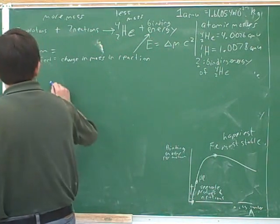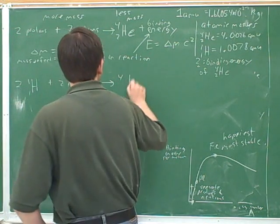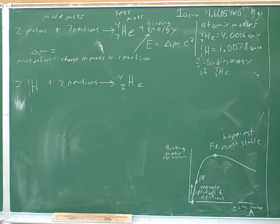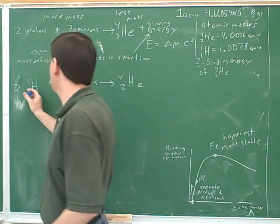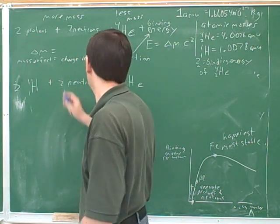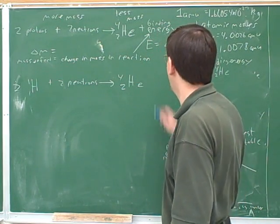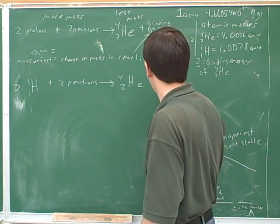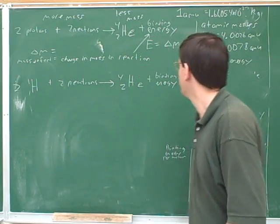So now we can write this equation as like this. That's two hydrogen nucleuses plus two neutrons equals two heliums. Now remember what our, and we know that's going to be plus the binding energy. So we have to figure out what our mass defect is going to be.